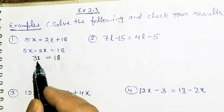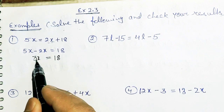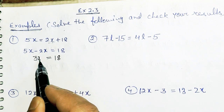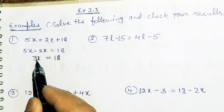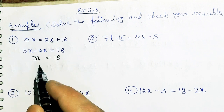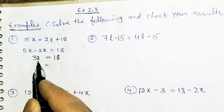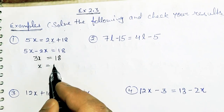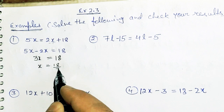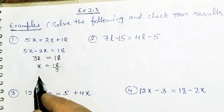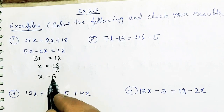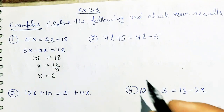So between 3 and x, what is the sign? The sign is multiplication. So 3 is in multiplication on the LHS, it will move to the RHS as division. x equals 18 divided by 3, so x equals 6.